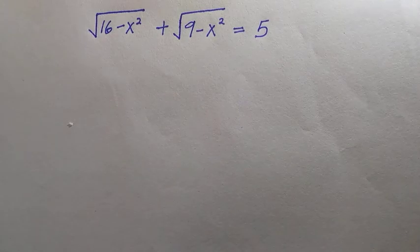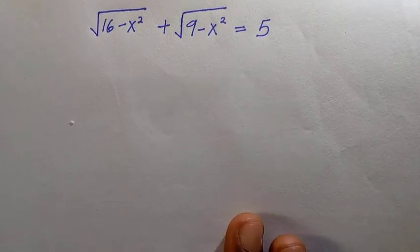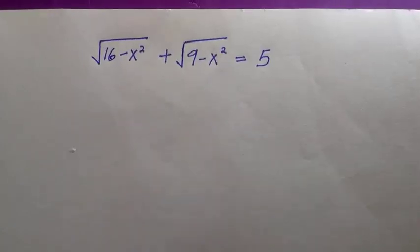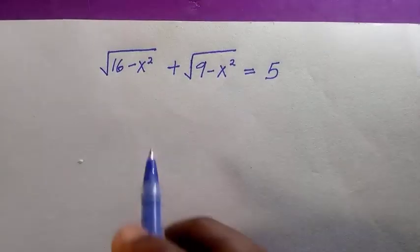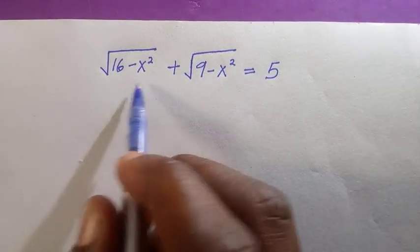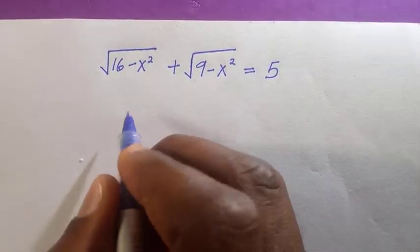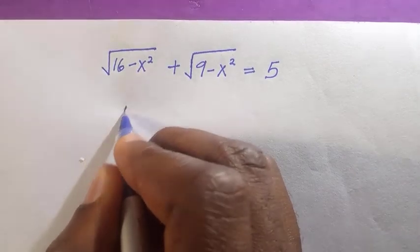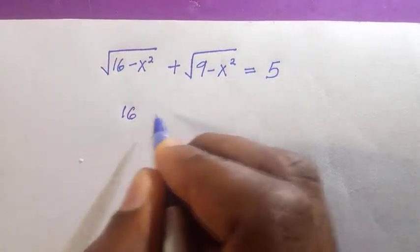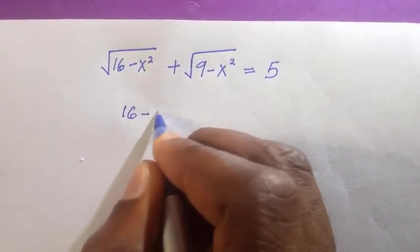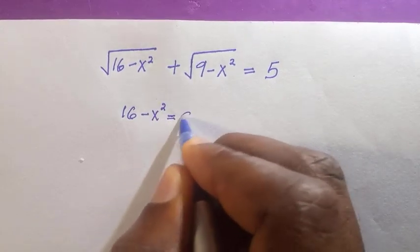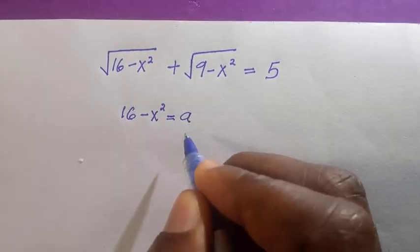Welcome to another video. In this system of radical equations, let's solve for x. The first thing to do is let 16 minus x squared equals to a.